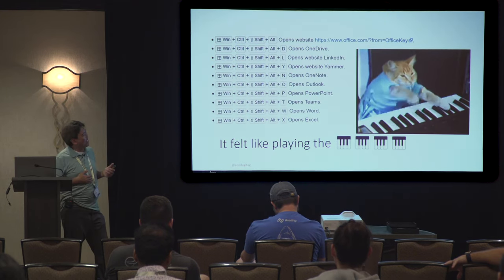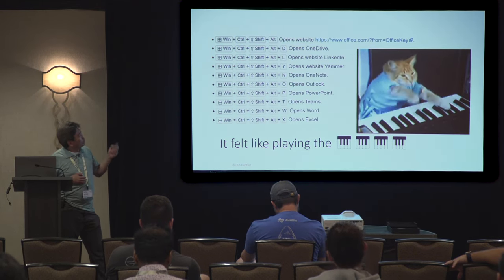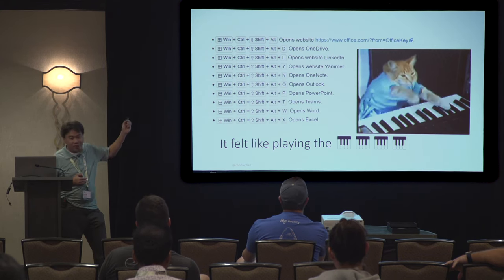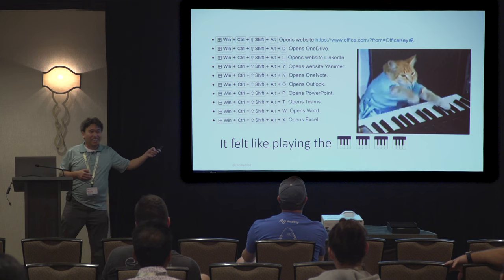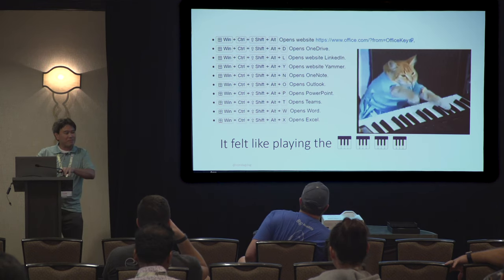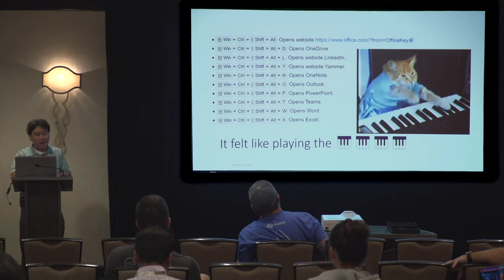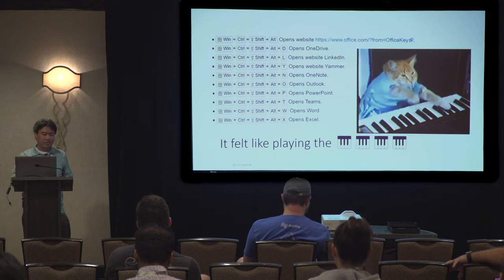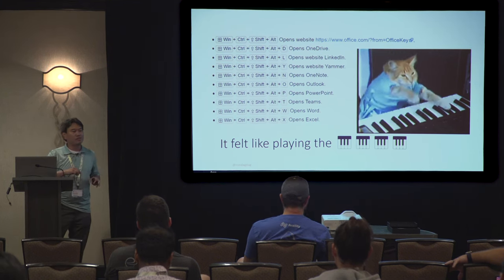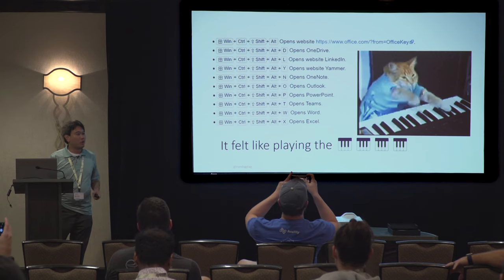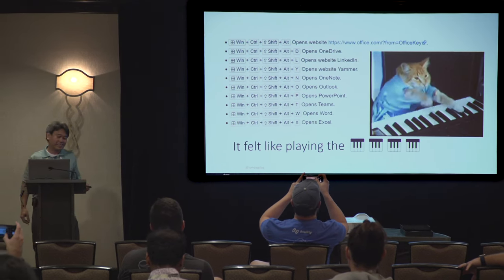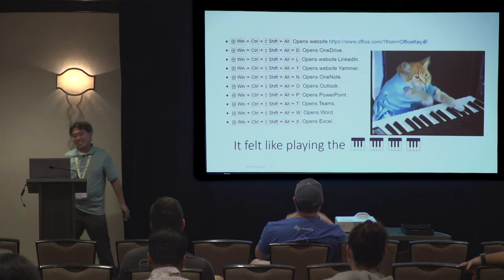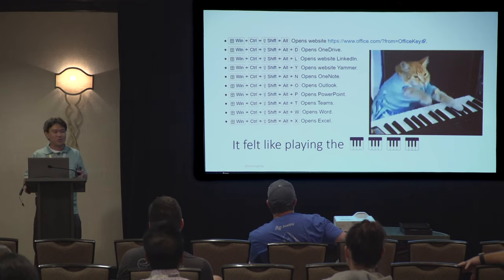Does anyone know that Windows key, Control, Shift, Alt opens Office and OneDrive and all these different shortcuts? It feels like playing the piano going through all these different combinations. If you want to open Word, you use Windows, Control, Shift, Alt, W — and it would open up Word. Is it a shortcut? Is it useful? I don't know, but it feels like playing the piano using the shortcut keys.